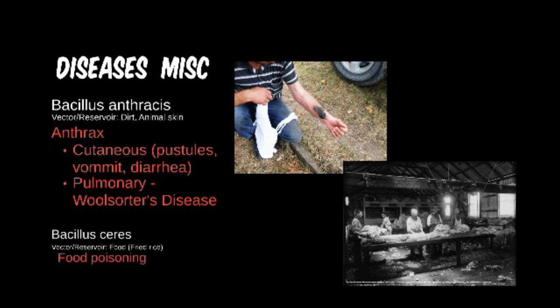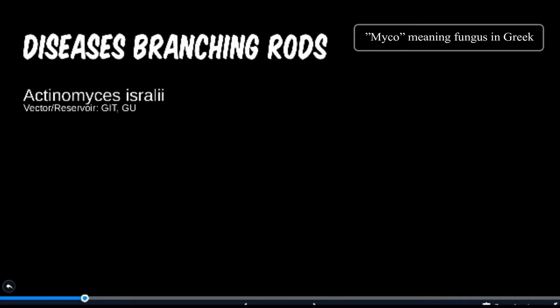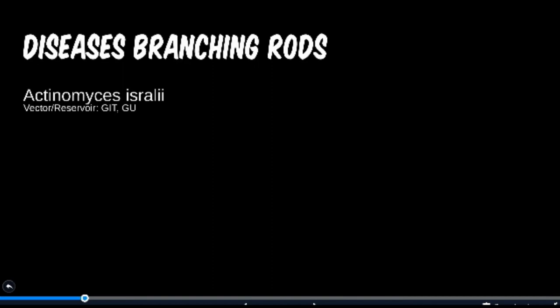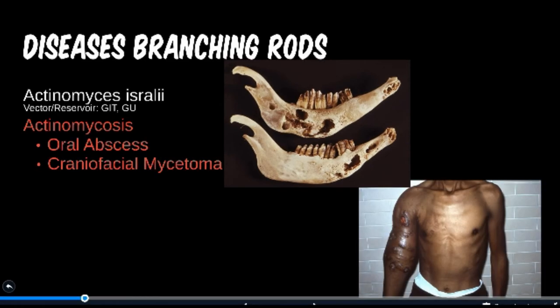Actinomyces israelii forms a fungus-like branching shape on culture. In the 1970s it was actually thought by some researchers to be a fungus, leading to its placement among the mycosis organisms. Now we know this bacillus is a hardy bacterium found in the human GIT and genitourinary system. Particularly it can be found in the mouth, leading to localized disease. Facial abscesses and jaw deformities are the most common presentation. However, in rare instances it has also been known to cause bacterial vaginosis and tissue inflammation in other parts of the body.